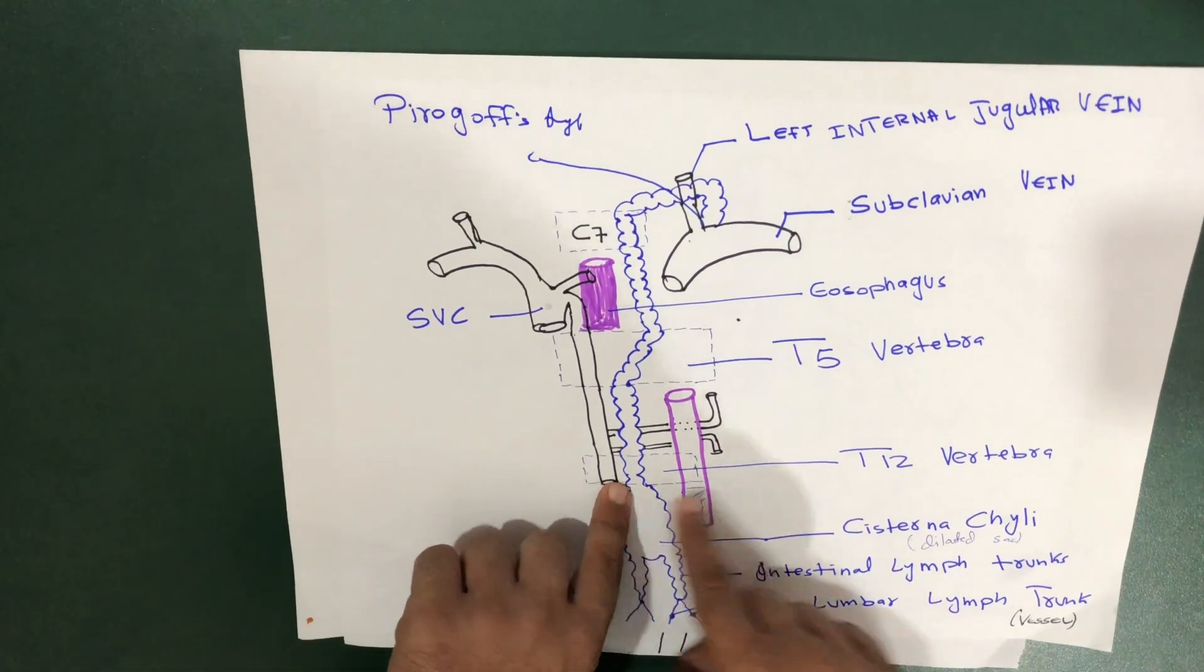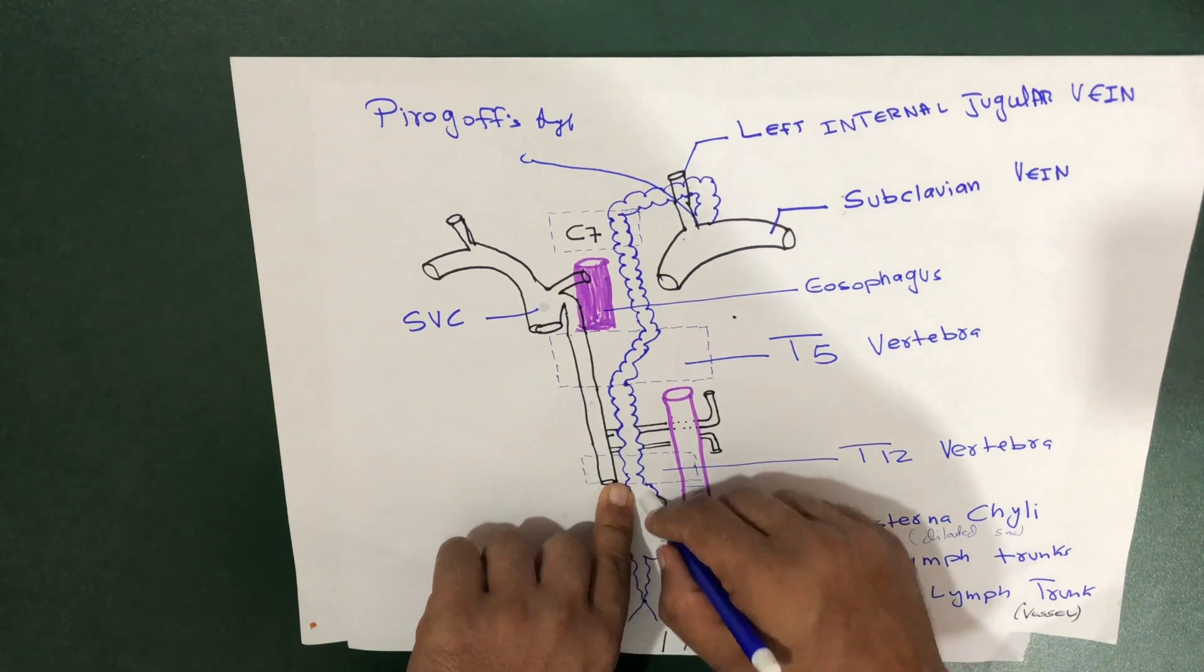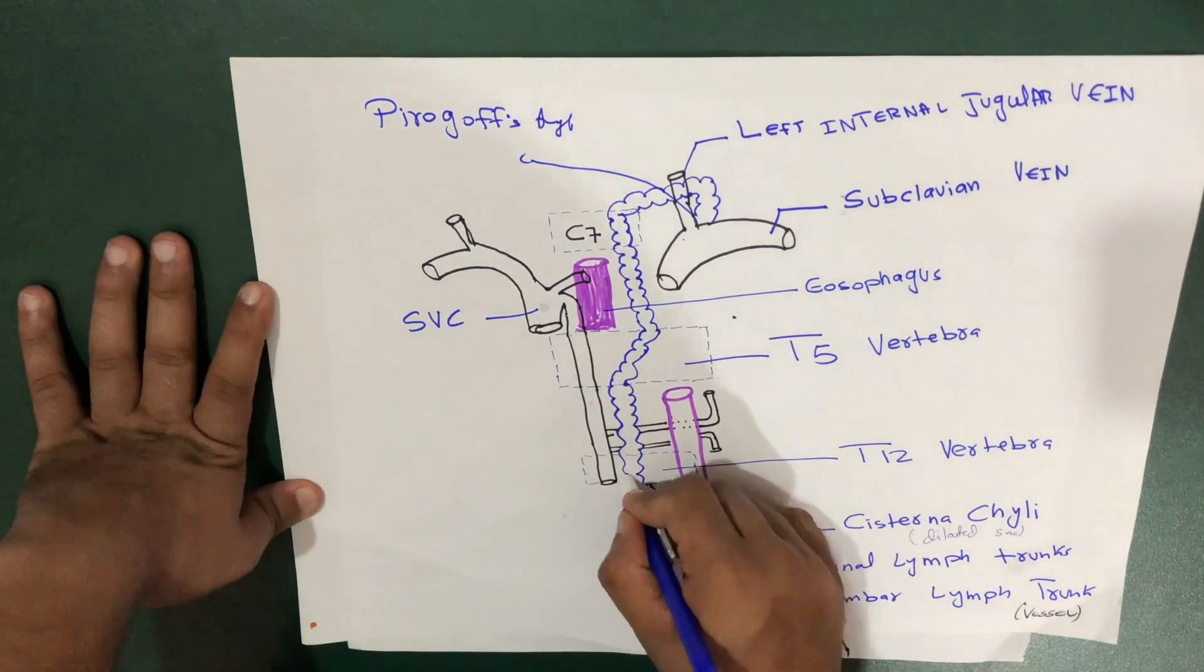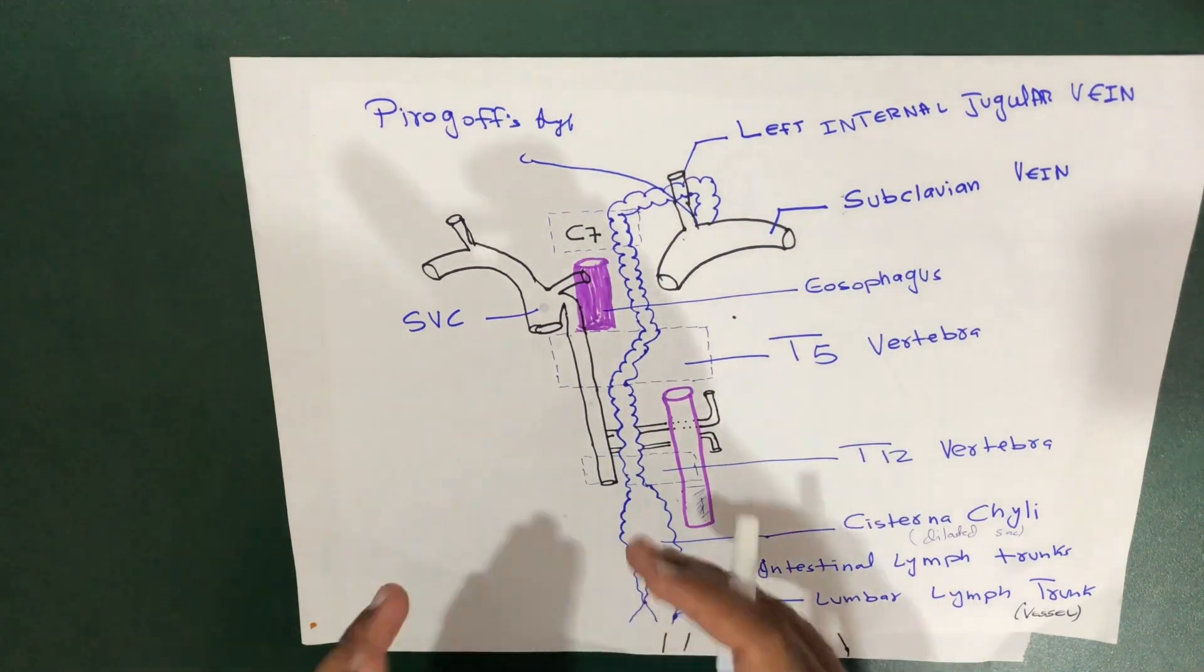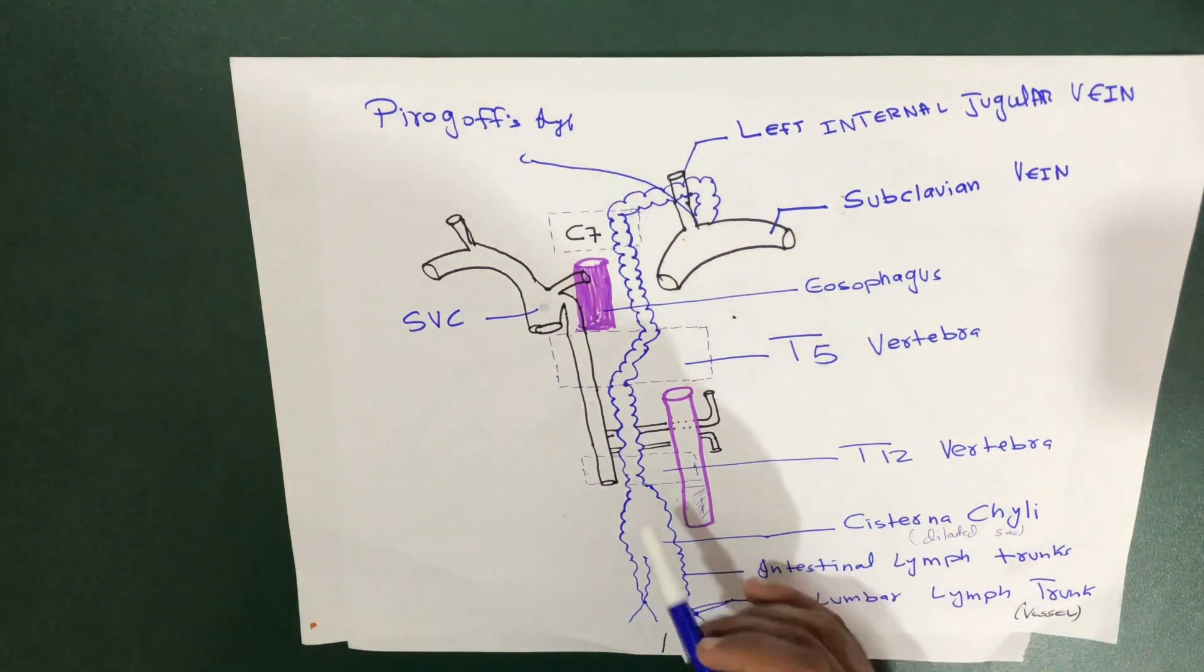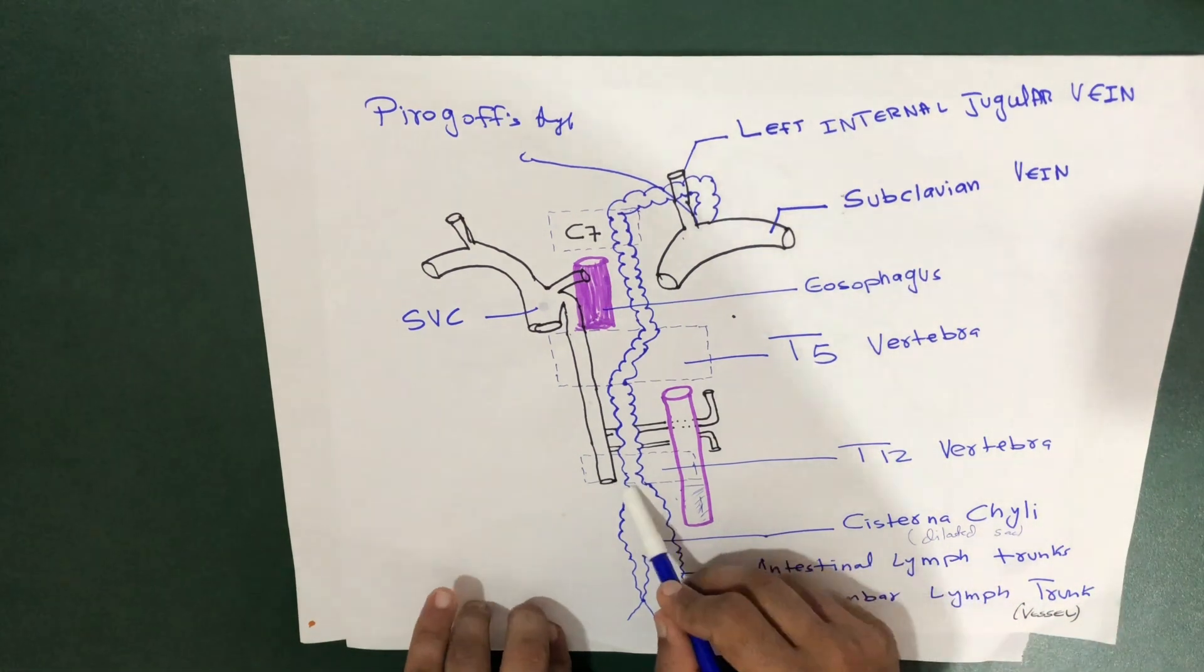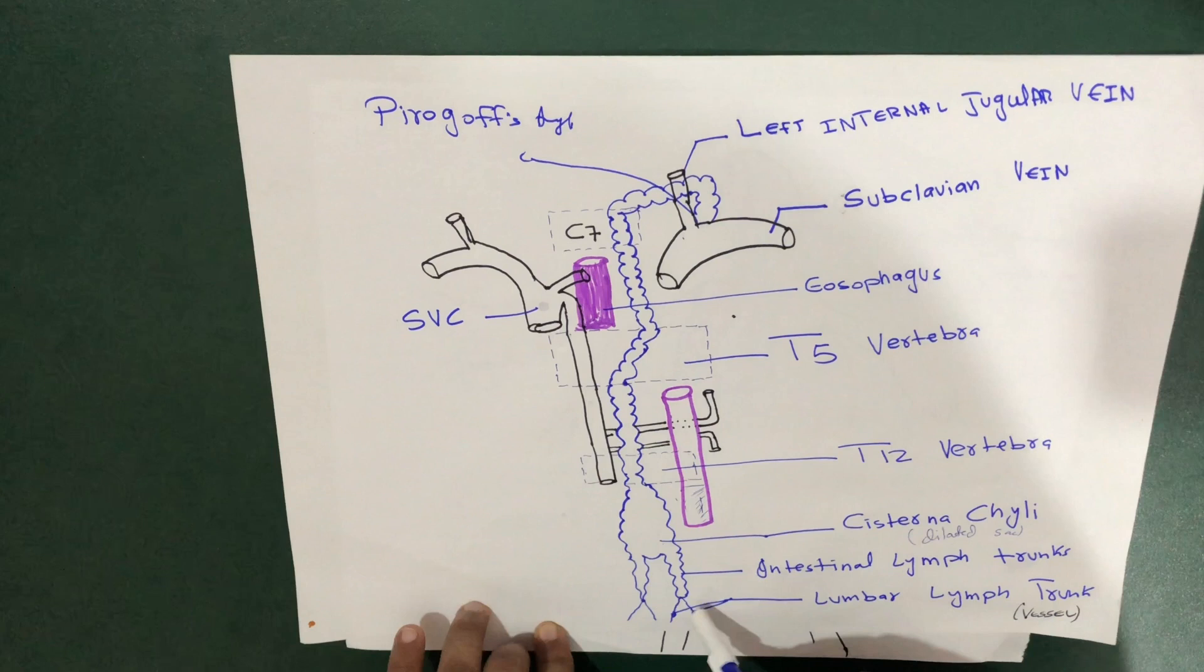The thoracic duct is about 40 centimeters in length, and its width is about 5 millimeters at the abdominal origin. It crosses the aortic hiatus at the level of T12. Let's discuss the pathway.